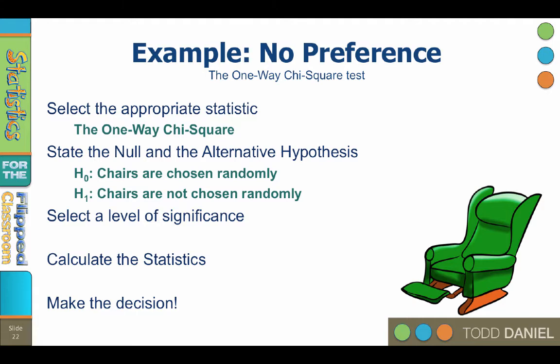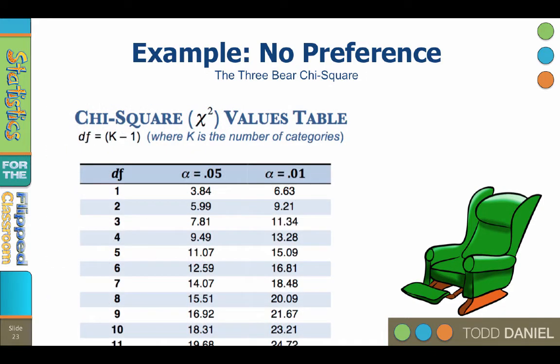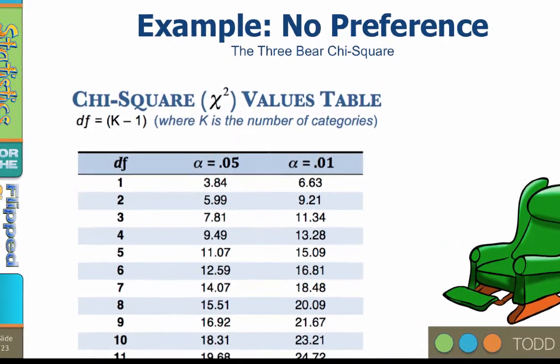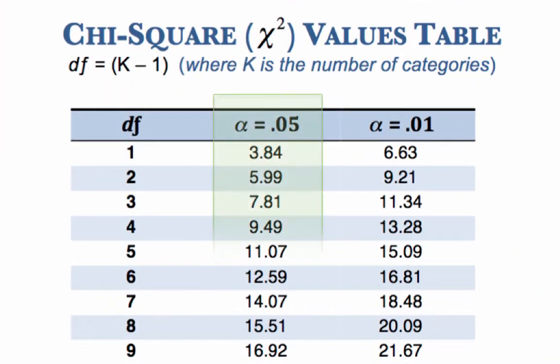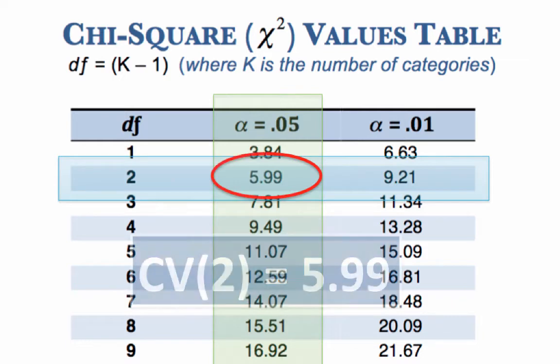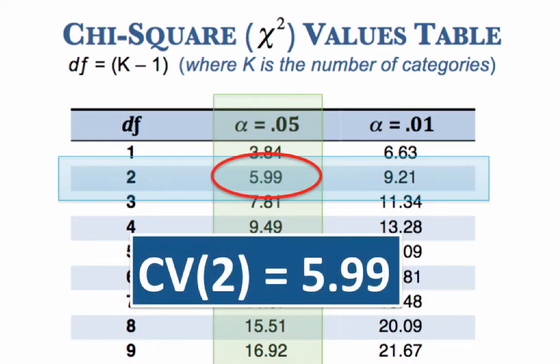Step three: Select a level of significance. As with our previous research, we assume the alpha is 0.05 two-tailed test, except all chi-square tests are one-tailed, so we'll just skip that. The degrees of freedom equals k minus one, where k is the number of categories in your sample. We have three chairs, so the degrees of freedom equals two. To find the critical value, go to the chi-square values table, found on the last page of your notes. For an alpha level of 0.05 with two degrees of freedom, the critical value is 5.99. Chi-squared values greater than 5.99 indicate that the chairs are not chosen randomly.